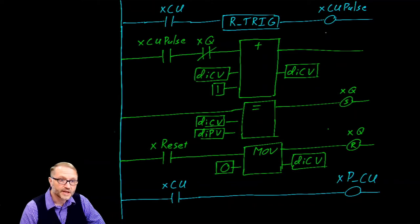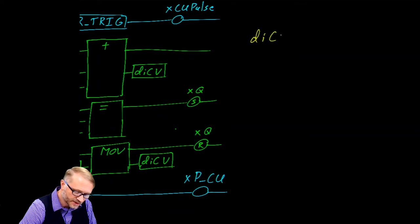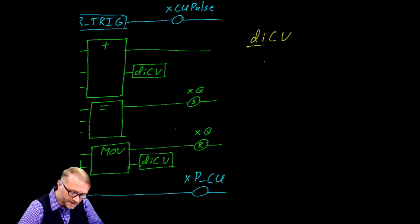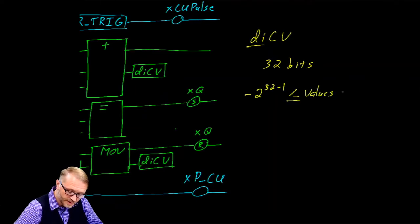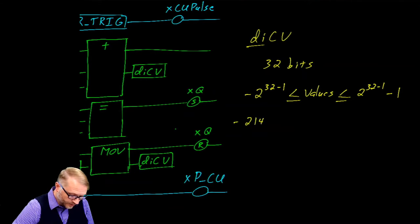Now that we understand some of the inner workings of our counter, let's see if we can break it in some creative ways. One of the first things you can do is manipulate the current value — that's a double integer current value. A double integer is 32 bits. It can take on numbers between negative 2 to the 32 minus 1 all the way up to 2 to the 32 minus 1 minus 1, which goes from negative 2,147,483,648.